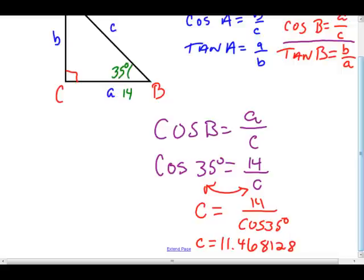So that is the length of side C, and we're going to round it to two decimal places. So 11.46 rounds up to 11.5. C equals 11.5.